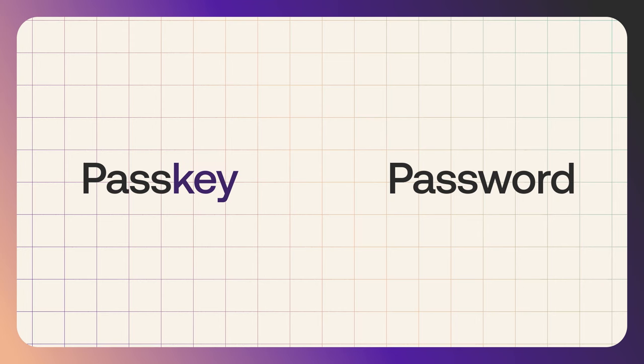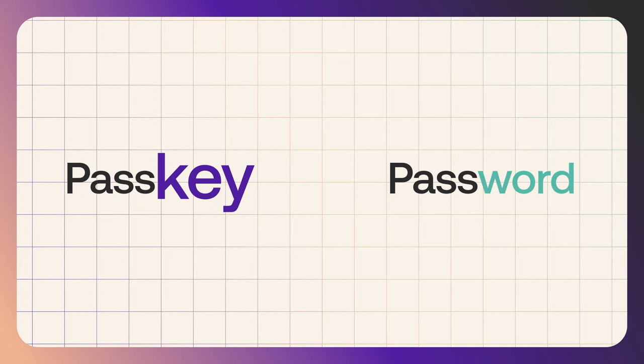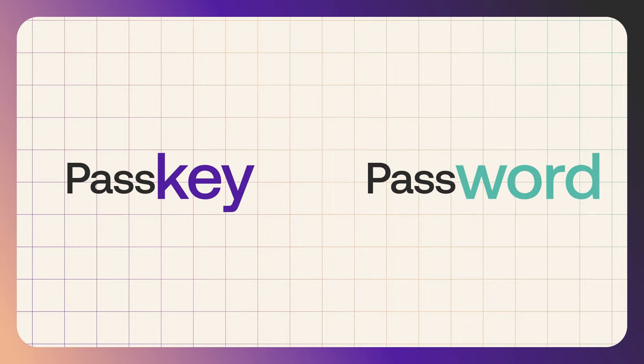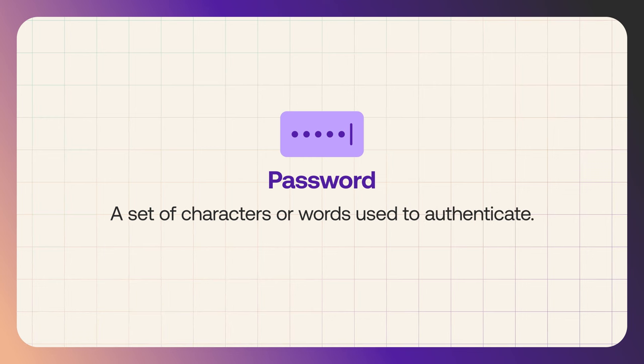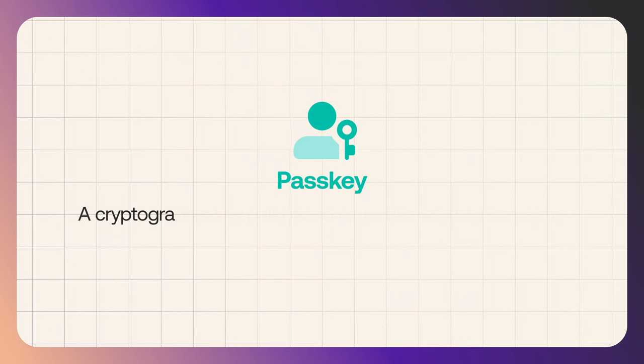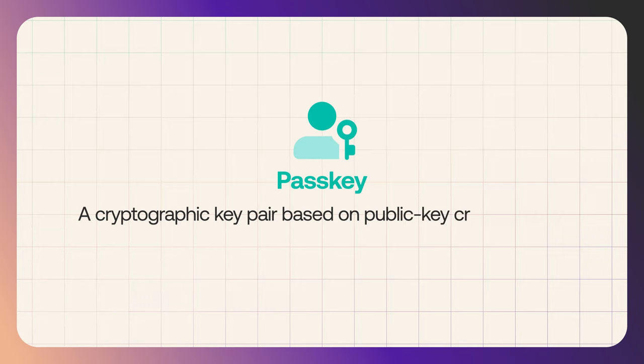Well, the first obvious difference is the key versus word. So we have passkey and password. And if you think about it, a password is a secret that is basically a set of characters or words that you use to authenticate, while a passkey is a cryptographic key pair based on public key cryptography — so basically a key.